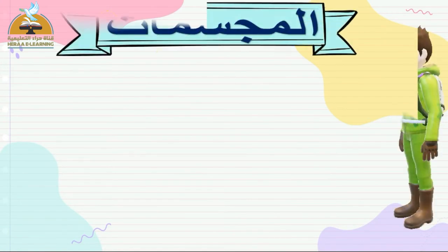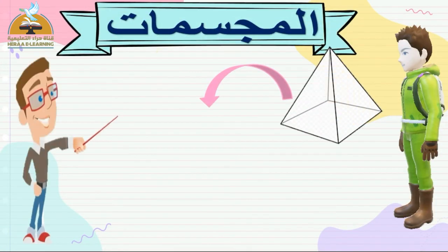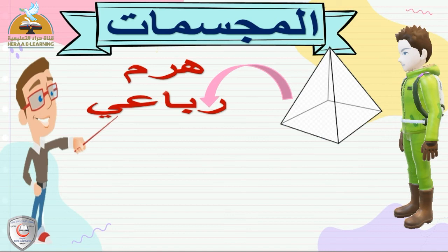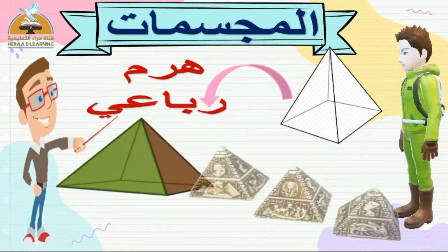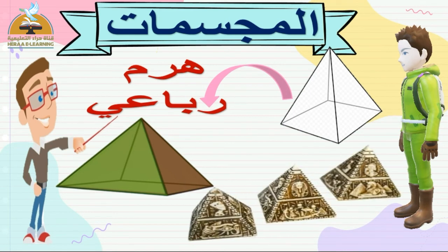يلا نكمل مع بعض. الشكل اللي قدامك ده يشبه ايه؟ يشبه الهرم اللي انت بتشوفه! عشان كده بنسميه هرم رباعي. سميناه رباعي ليه؟ علشان القاعدة اللي قاعد عليها دي عبارة عن مربع وليها أربع أضلاع. الهرم الرباعي ممكن نشوفه في ايه؟ زي الأهرامات! الأهرامات عبارة عن هرم رباعي.